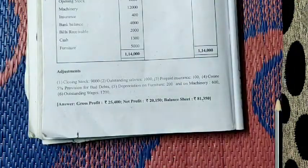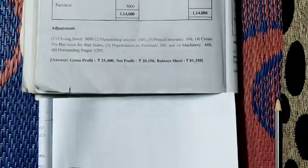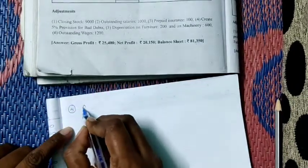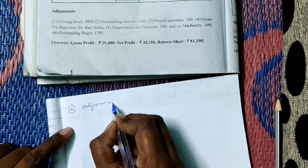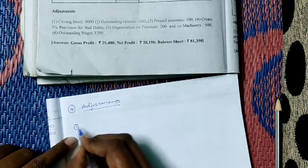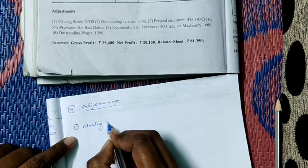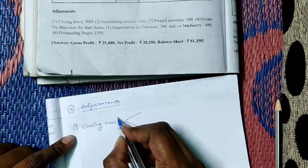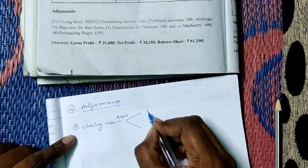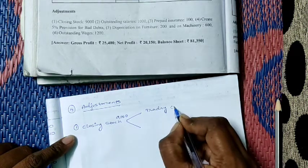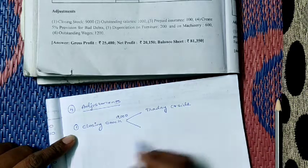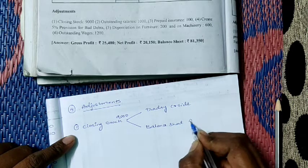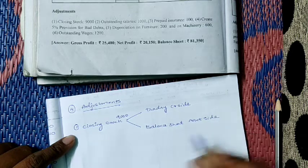Now let us discuss the adjustments. First adjustment: closing stock. Each and every adjustment will appear twice. Closing stock value is 9,000. First we have to take it in trading account, credit side. Next time it will appear in balance sheet, asset side.